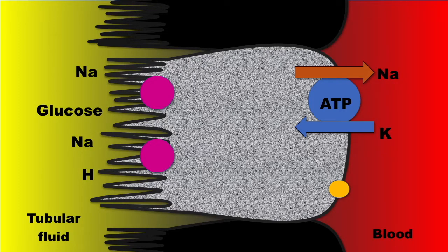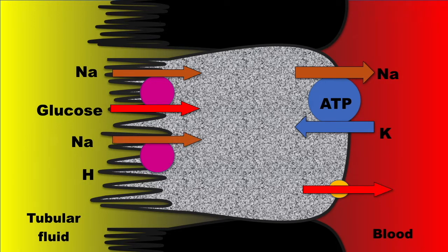This creates a low sodium concentration inside the cell, establishing a gradient for tubular reabsorption of sodium on a downhill diffusion, releasing potential energy to drive the co-transport of solutes like glucose, or to exchange it with hydrogen ions against the concentration gradient.